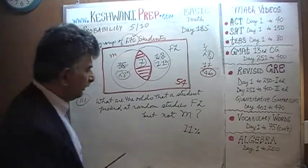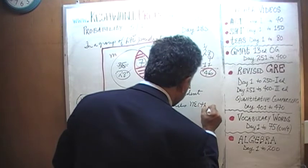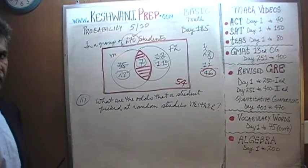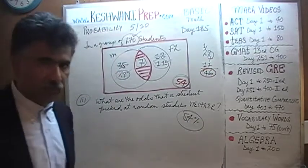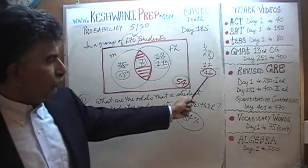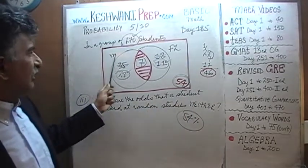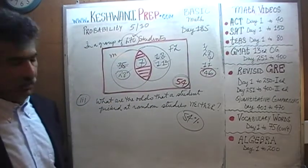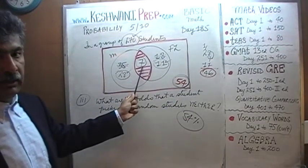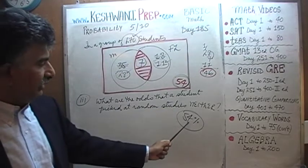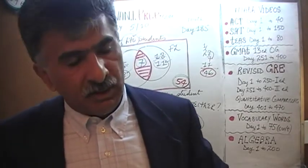What are the odds that a student picked at random studies neither? We know that 46% of the students study either music or foreign language or both. That tells us that 54% of the people must not study either. What are the odds that a student picked at random studies neither music nor foreign language? The odds are 54%.